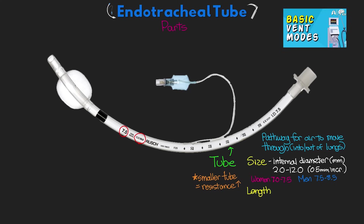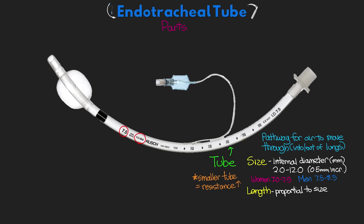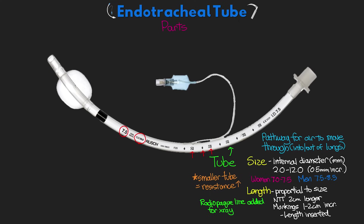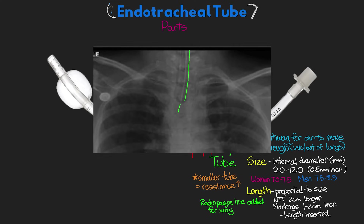Smaller tubes may require additional pressure support to overcome resistance. The length of an ET tube is proportional to the size selected, though nasotracheal tubes are generally a few centimeters longer than orotracheal tubes due to the greater distance traveled through the nose. Along the side of the ET tube there are markings in one or two centimeter increments indicating the insertion depth. Because PVC is not radio-opaque, a radio-opaque line is added running the full length of the tube down to the tip, allowing better visualization on x-ray for confirmation of placement and proper positioning.